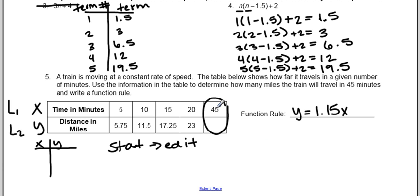Now, to find out the distance for 45 miles, I'm going to take this x and plug it in. So I have y equals 1.15 times 45, which gives me 51.75 miles.